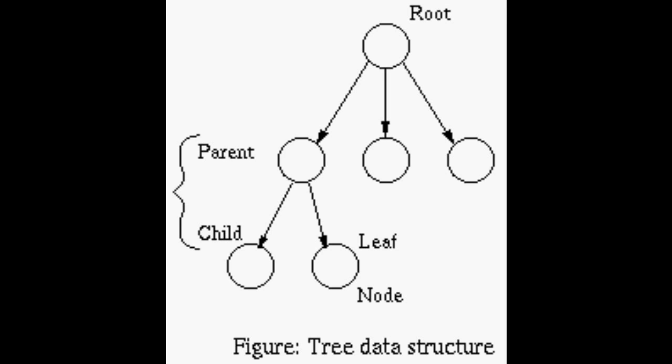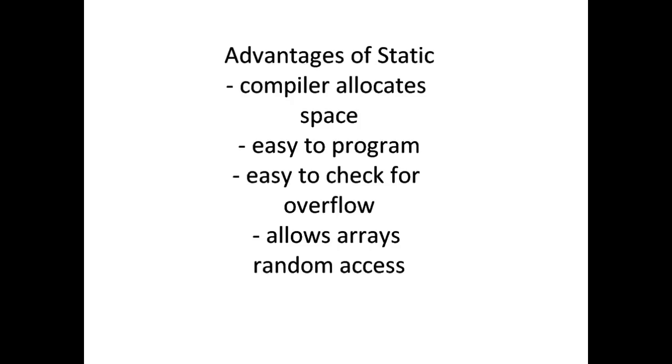These differences mean both have some advantages and disadvantages. The advantages of a static data structure are that a compiler can allocate space, they are easy to program, it is easy to check for overflow, and an array allows random access.